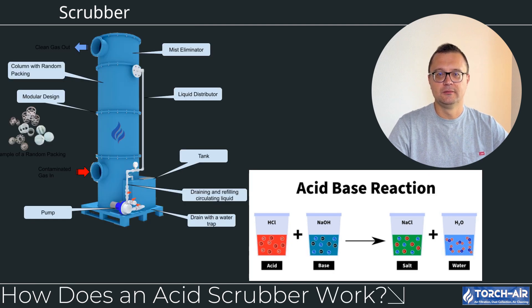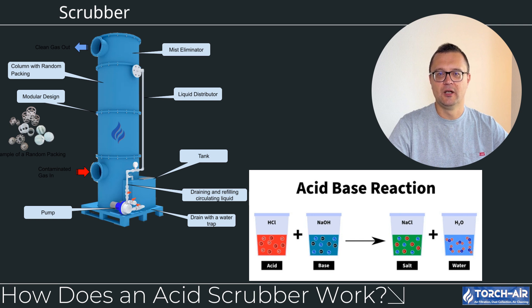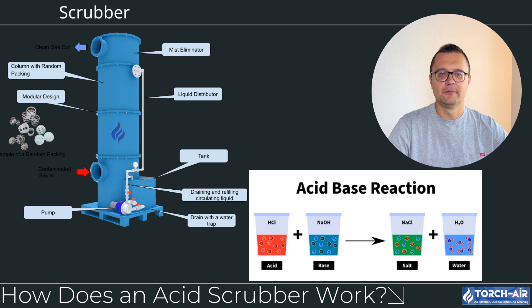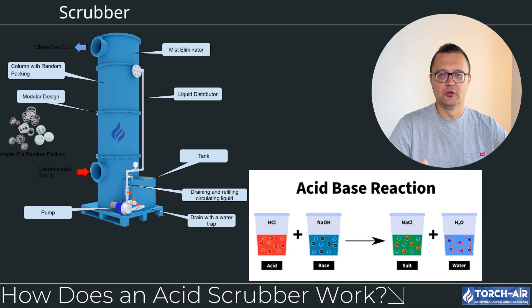How does an acid scrubber work? Let's get into the mechanics of how these systems operate. Step 1 — Contaminated gas enters the scrubber. The exhaust gases containing acidic contaminants are directed into the scrubber system. The gas typically enters from the bottom and moves upward through the scrubber tower. Step 2 — Injection of scrubbing liquid. As the contaminated gas rises, a scrubbing liquid — often an alkaline solution such as sodium hydroxide (NaOH) or lime slurry — is sprayed into the tower. This liquid creates a large surface area for interaction between the gas and the liquid.